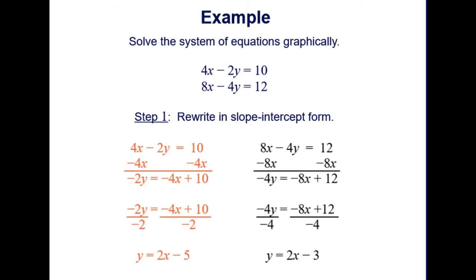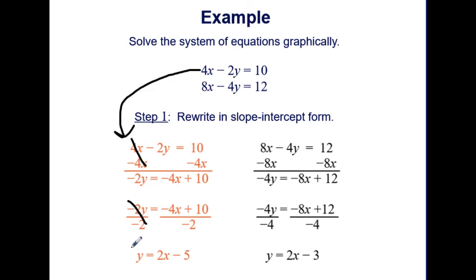Here is another example. We again want to rewrite in slope-intercept form. For 4x minus 2y equals 10, we subtract 4x from both sides and divide by negative 2 to get y equals 2x minus 5. For the second equation, we subtract 8x and divide by negative 4 to get y equals 2x minus 3.